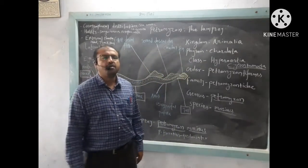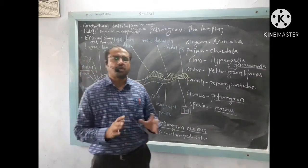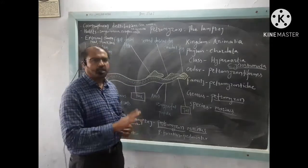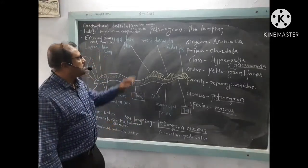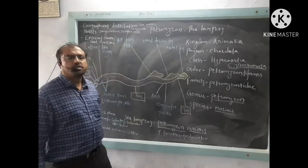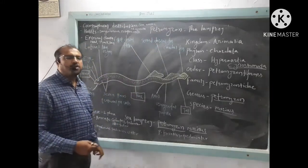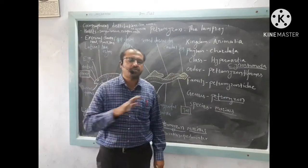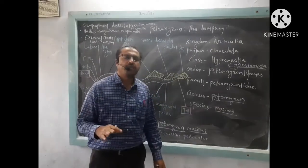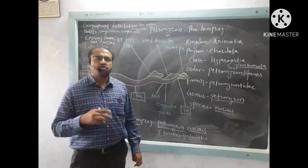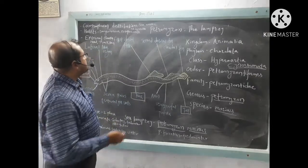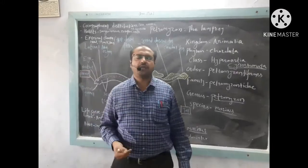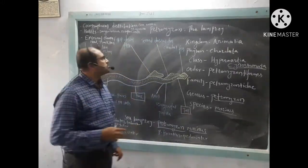Cyclostomata means circular mouth — individuals which have a circular mouth are called cyclostomes. The jaws are absent, which is why they are called Agnatha. Petromyzon is generally found in the ocean, but some species are also found in freshwater. Geographically, these animals are found in North America, Canada, Europe, and the coastal regions of Japan.